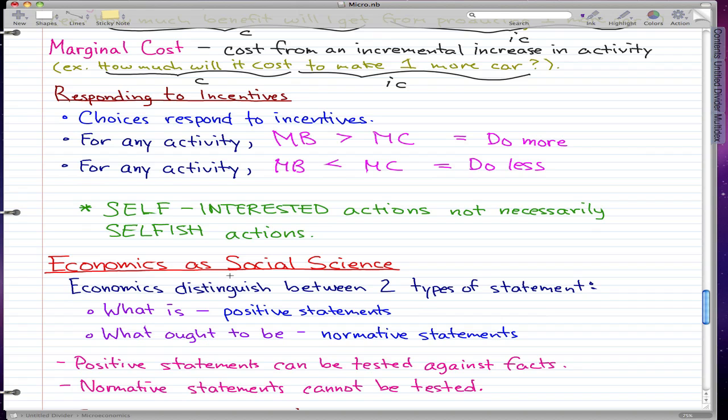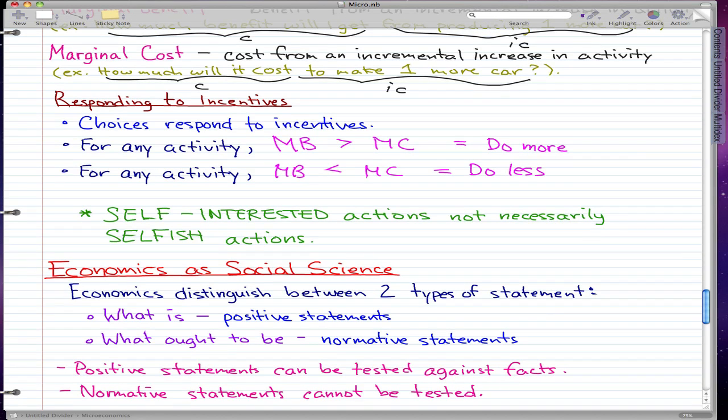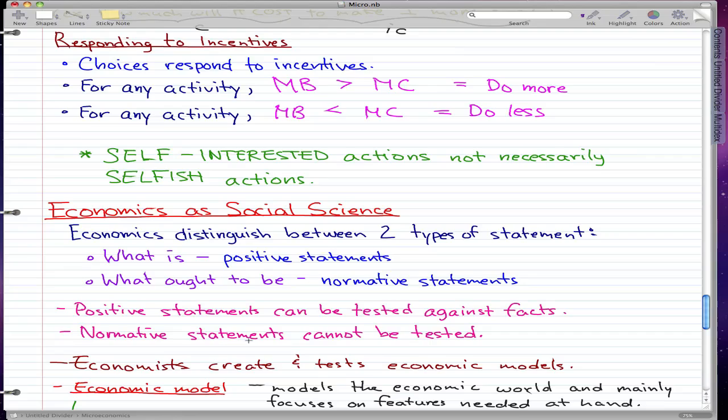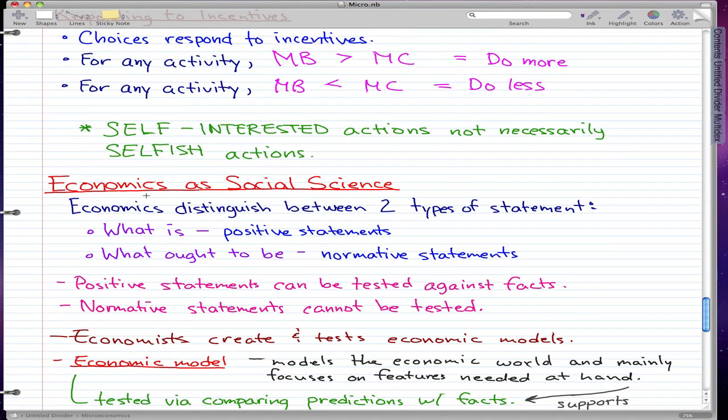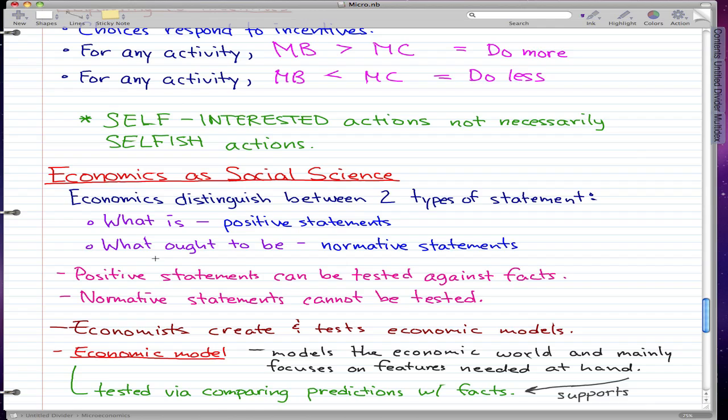Economics as a social science. Economics distinguishes between two types of statements: what is and what ought to be. What is is a positive statement, and what ought to be is a normative statement. Positive statements are statements that can be tested against facts, and normative statements are statements that cannot be tested.